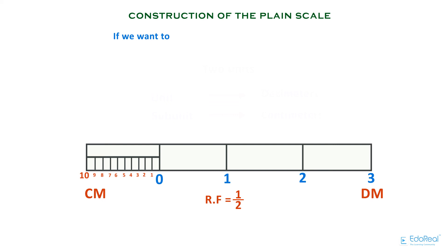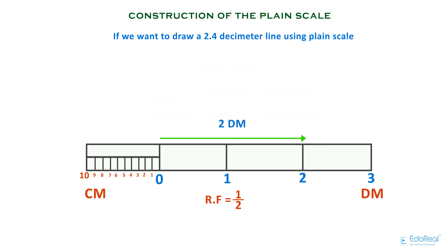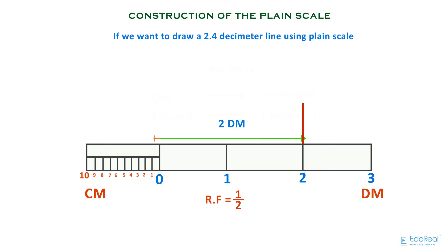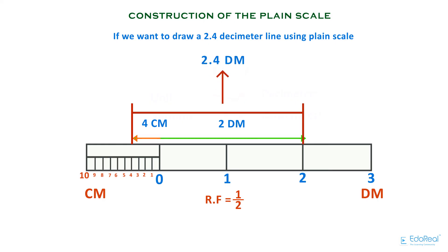If we want to draw a 2.4 decimeter line using the plane scale: from 0 to 2 indicates 2 decimeters, so draw a vertical line from that point. We still need to draw 0.4 decimeters, or 4 centimeters. To the left of the scale from point 0 we have centimeters, so take 4 centimeters and draw a vertical line. Now join the two vertical lines — that indicates 2.4 decimeters.